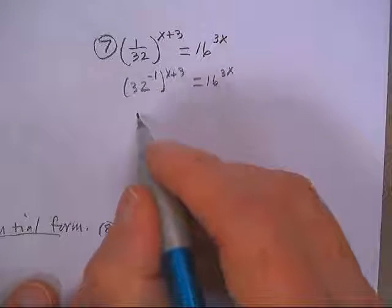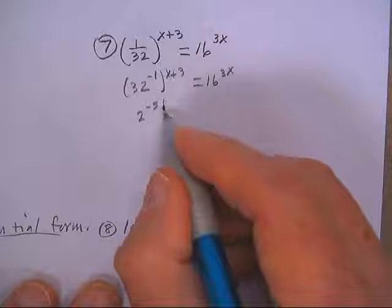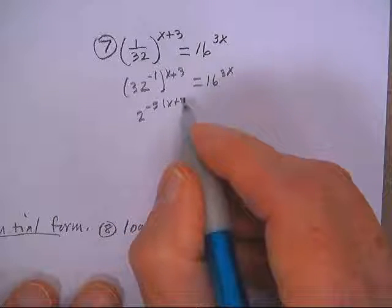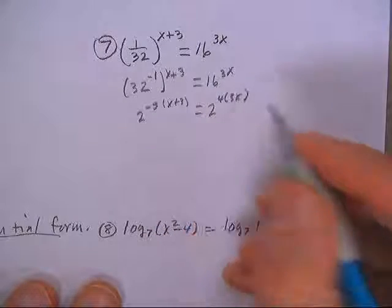And then 32 is 2 to the 5th, so that would really be 2 to the negative 5th, and x plus 3. 16 is 2 to the 4th, and 3x.